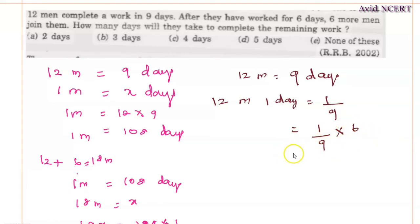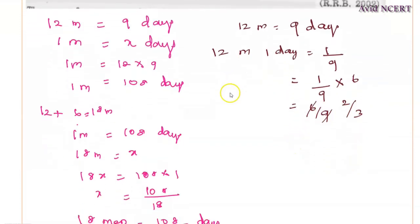This equals 6 by 9. Simplifying: 2 times 6, 3 times 9, which gives us 2 by 3. So in 6 days...